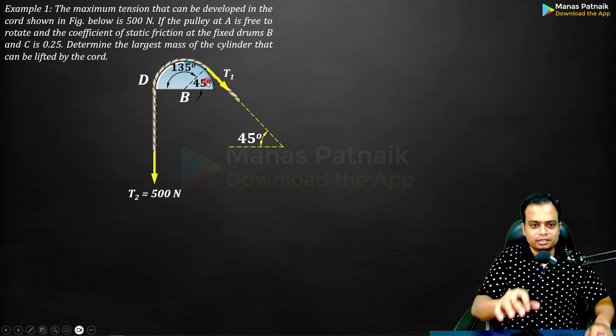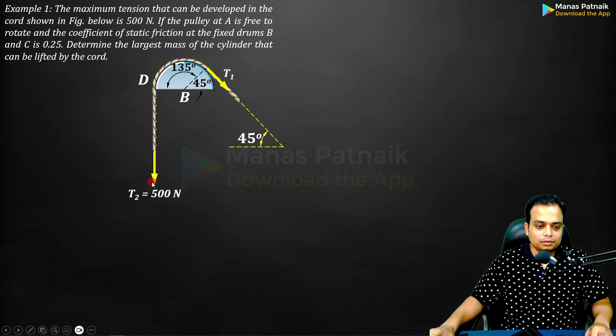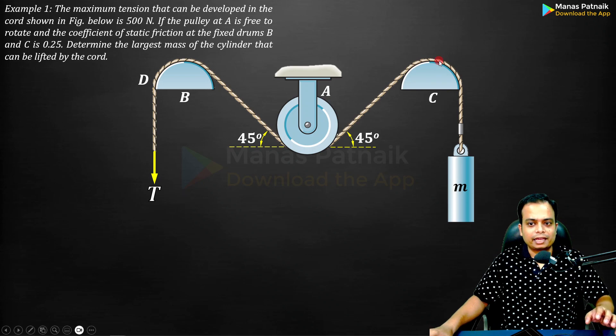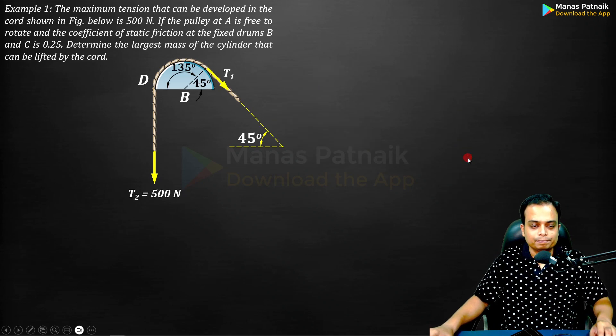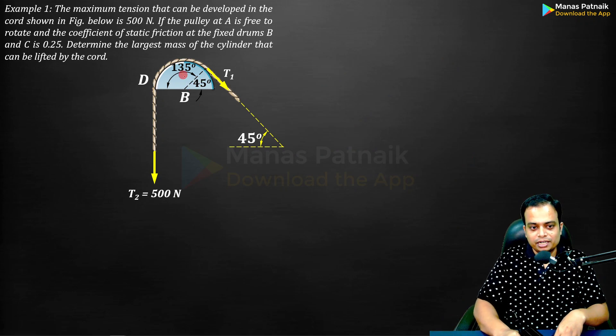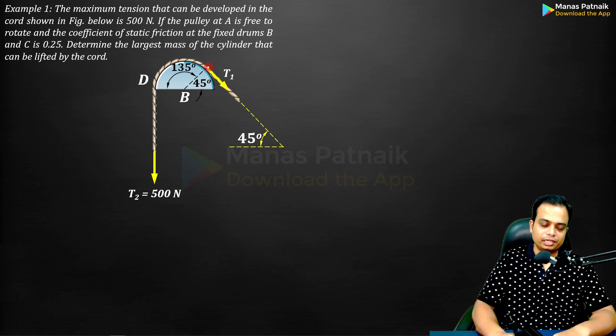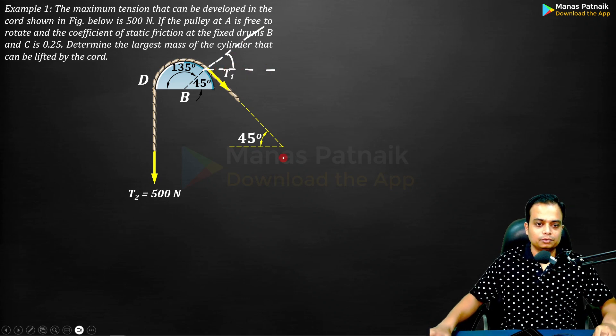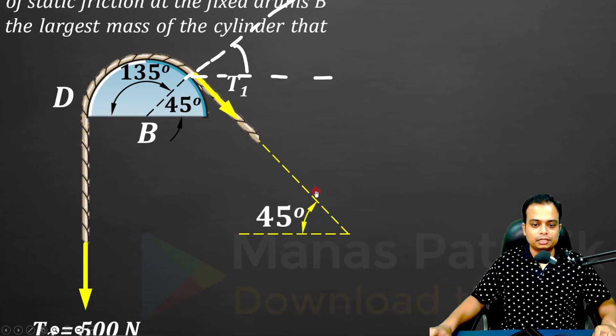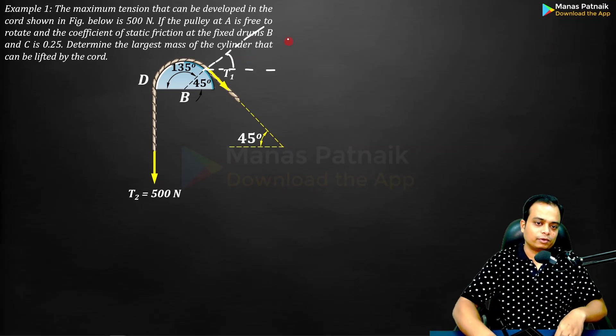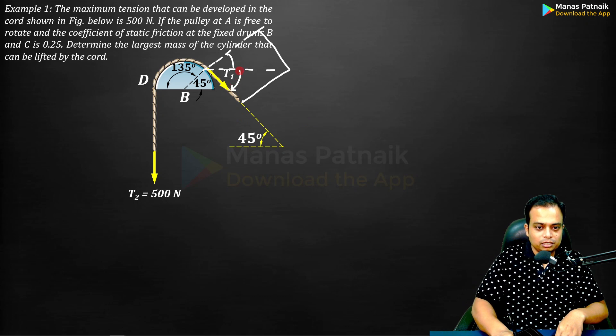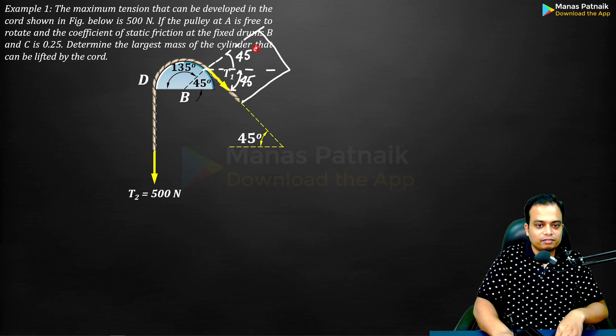How is this 45 degrees? You'll understand eventually. We've taken this as 500 newtons. We know that the maximum tension developed is 500 newtons, so based on this we're going to work out the mass. This angle over here between these two lines is 90 degrees, so if this is 45, this much has got to be 45.